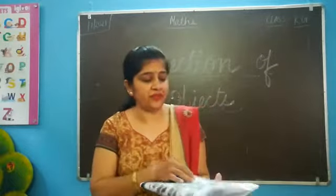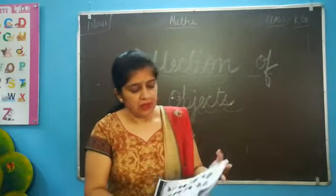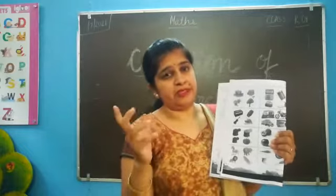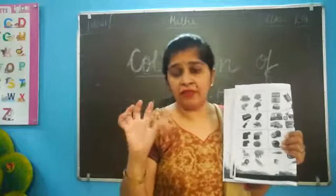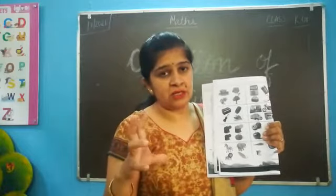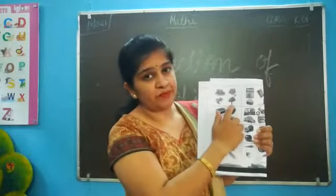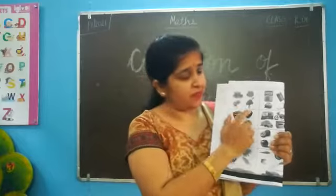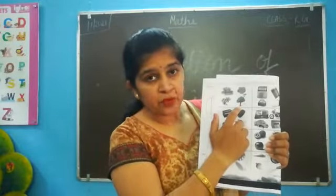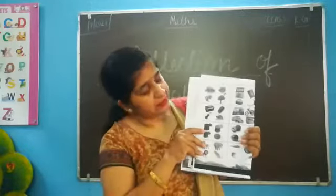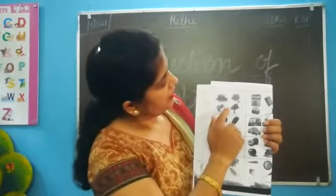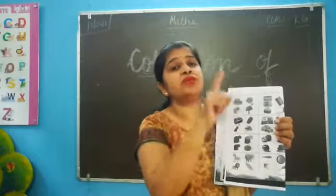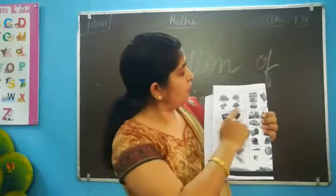Now, turn the page. What we have to do in this? There is an odd one out. That means, if there is a group of flowers, in A we have a tree — that is not a part of flowers. That means we have to cross the tree. Like this, this is a collection of flowers, but there is a tree also. That means tree is wrong, we have to mark it wrong.